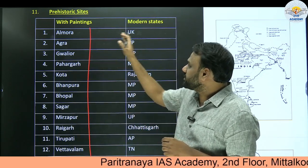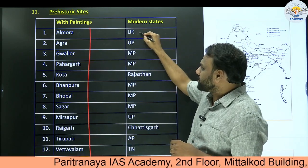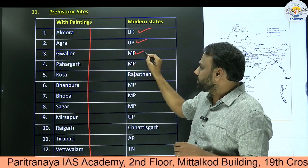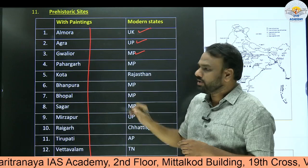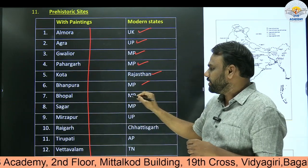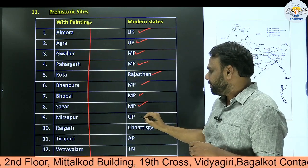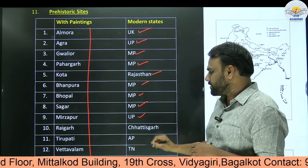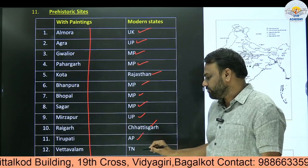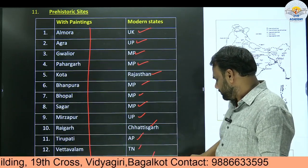The key sites and their states: Almora in Uttarakhand, Agra in Uttar Pradesh, Gwalior in Madhya Pradesh, Pahargah in Madhya Pradesh, Kota in Rajasthan, Banpura in Madhya Pradesh, Bhopal in Madhya Pradesh, Sagar in Madhya Pradesh, Mirzapur in Uttar Pradesh, Raigarh in Chhattisgarh, Tirupati in Andhra Pradesh, Vettavalam in Tamil Nadu, and Munnar in Kerala.